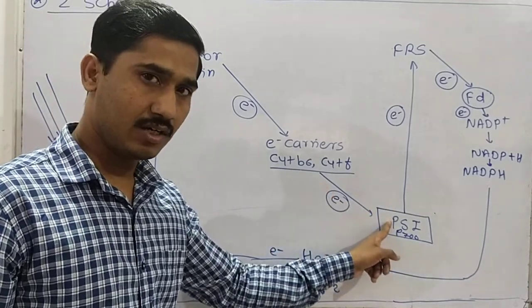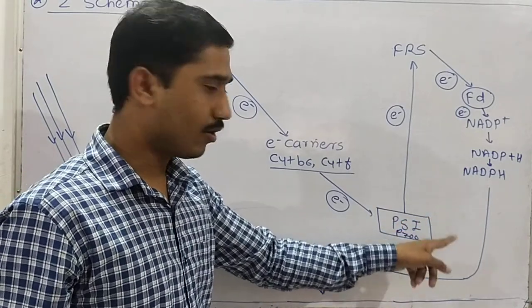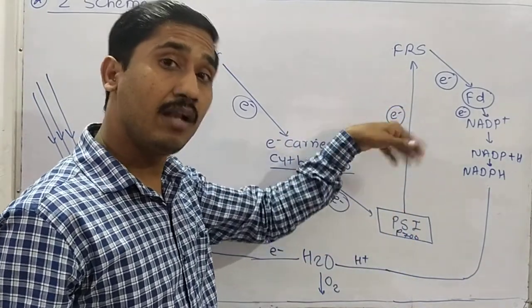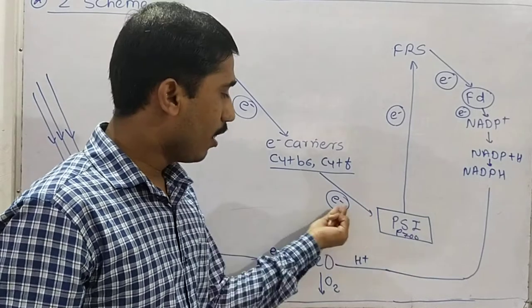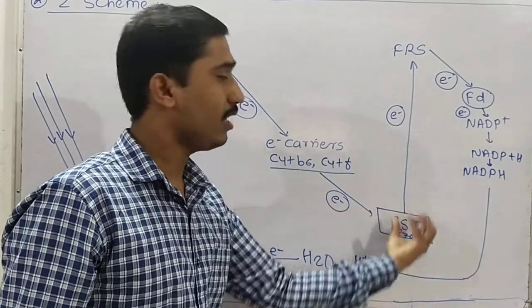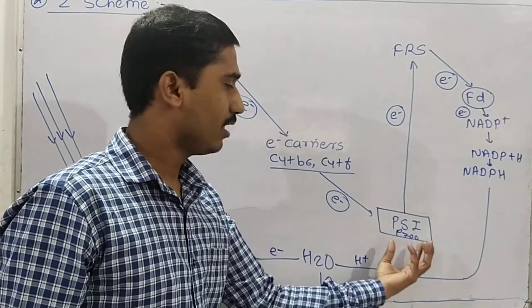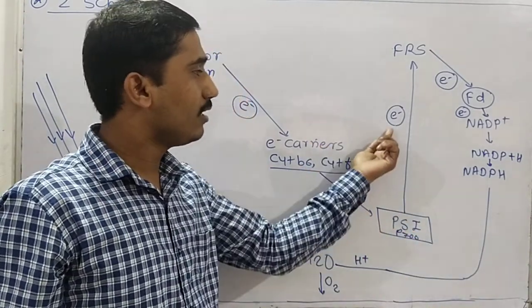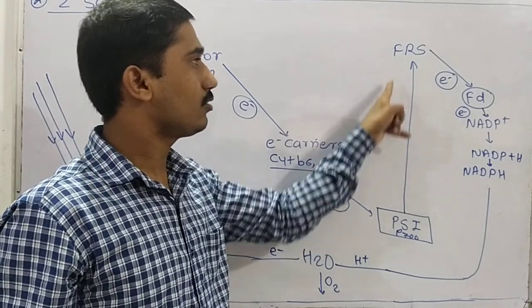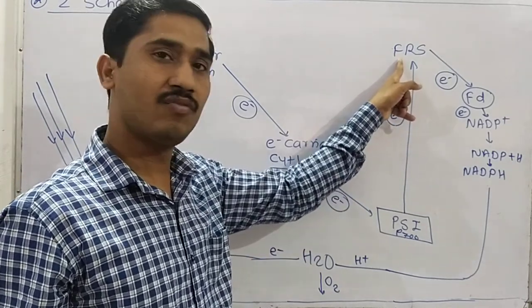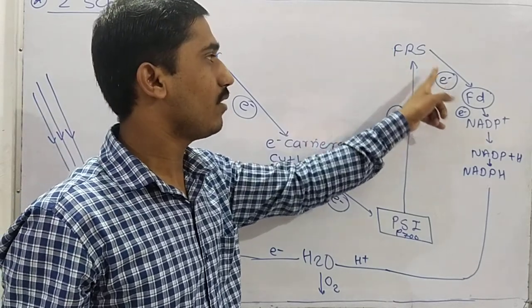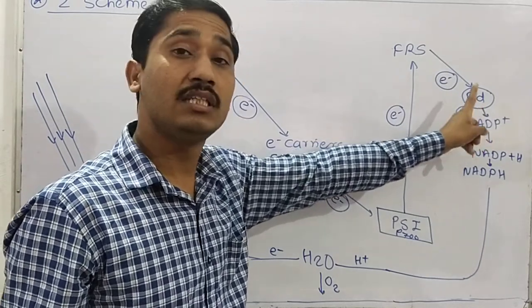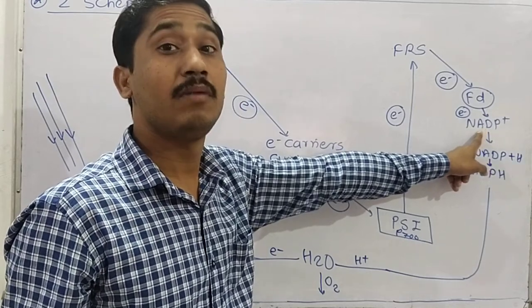Before the electron from PS II reaches PS I, PS I is already in the ionized state — because it has already absorbed 700 nanometer wavelength light and repelled its own electron. When PS I receives the electron from PS II, it returns to the steady state. It then acts again as a reaction center, receives sunlight, and repels another electron, which is accepted by FRS.